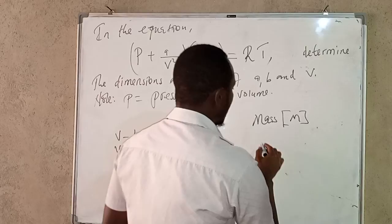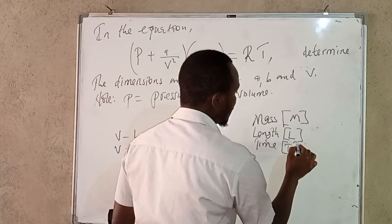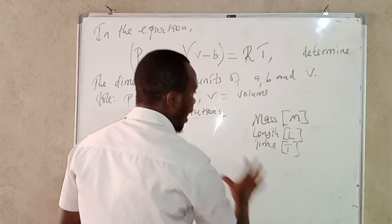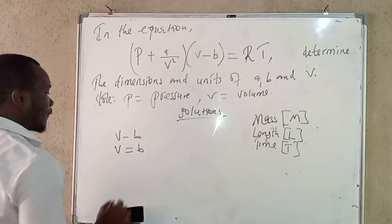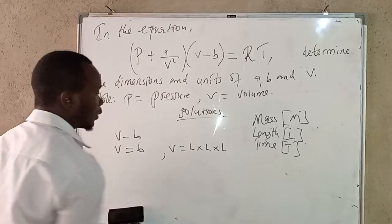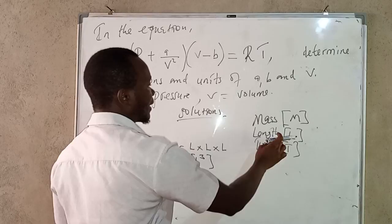From the three basic quantities we consider in dimensional analysis, we have: mass M, length L, and time T. These are the fundamental quantities on which everything in dimensional analysis is based. For volume, we know that the dimensions are L times L times L, which gives us L to the power 3.